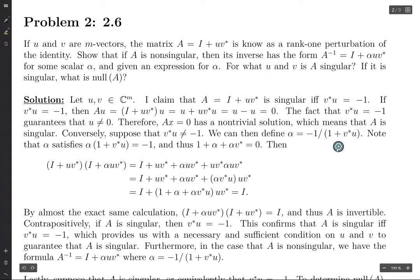Then we can define alpha equal negative 1 divided by 1 plus V star U. And here, we're able to define alpha like this because the fact that V star U is not negative 1 means that this denominator here is non-zero, and so alpha is some real number. If it were the case that V star U equals negative 1, then we would not be able to define alpha like this.